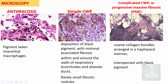Progressing from simple to complicated disease, the fibrosis becomes more and more haphazard, with dark pigment interspersed throughout. You also find cicatricial emphysema, where air spaces are dilated due to long-standing scarring from fibrosis. This cicatricial emphysema, with or without bullae, is found in progressive massive fibrosis.